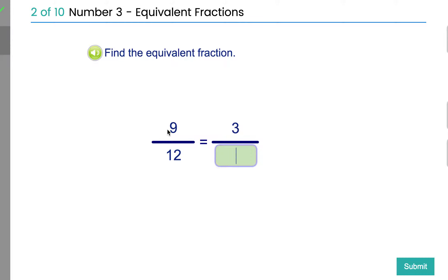9 to 3. How do you turn 9 into 3? You divide it by 3. So if you divide by 3 at the top, you divide 12 by 3 at the bottom. 12 divided by 3 is 4. Simple as that.